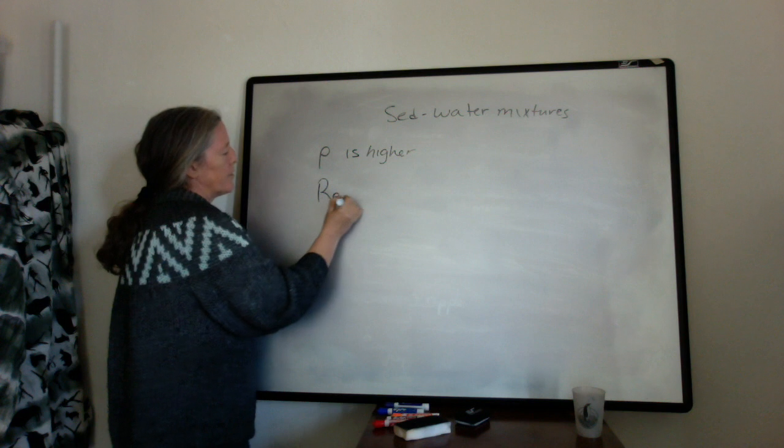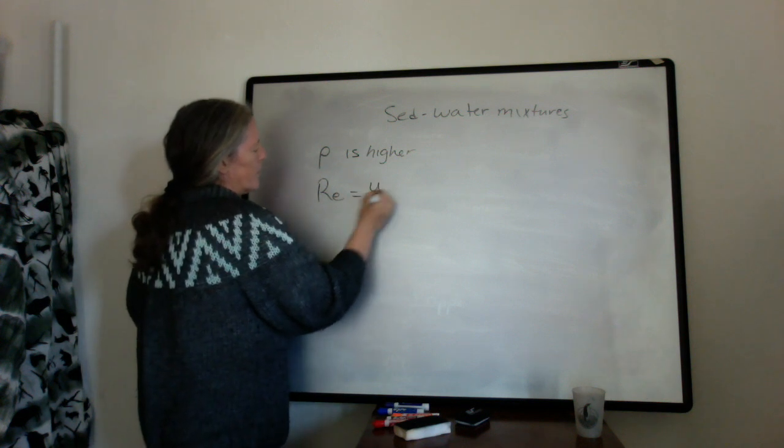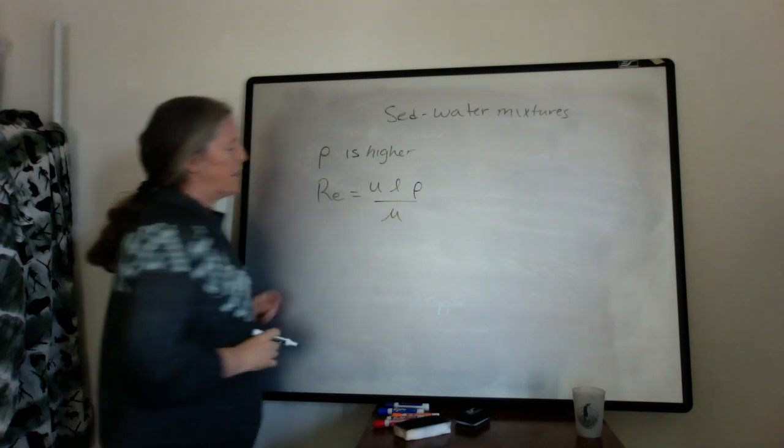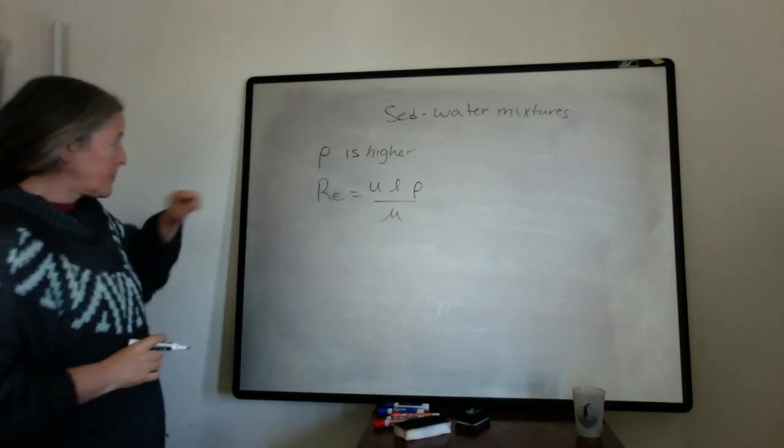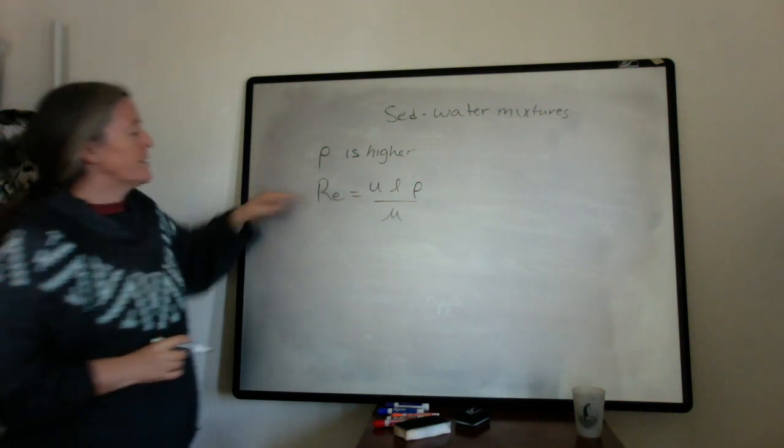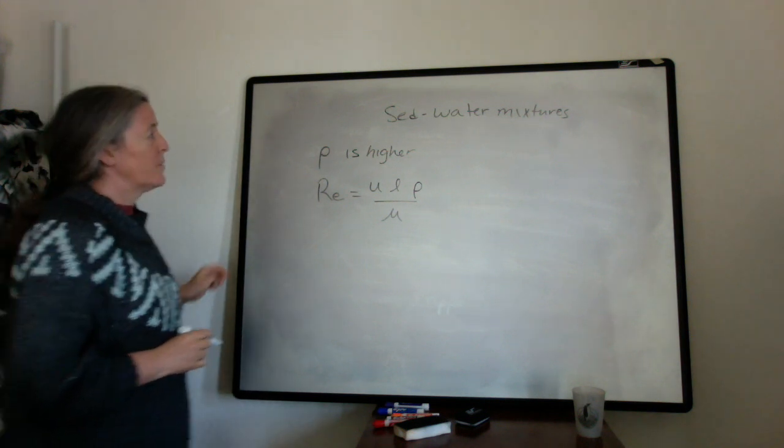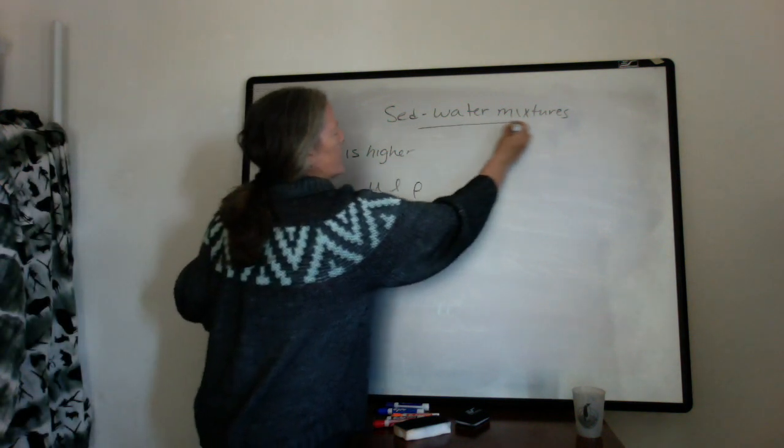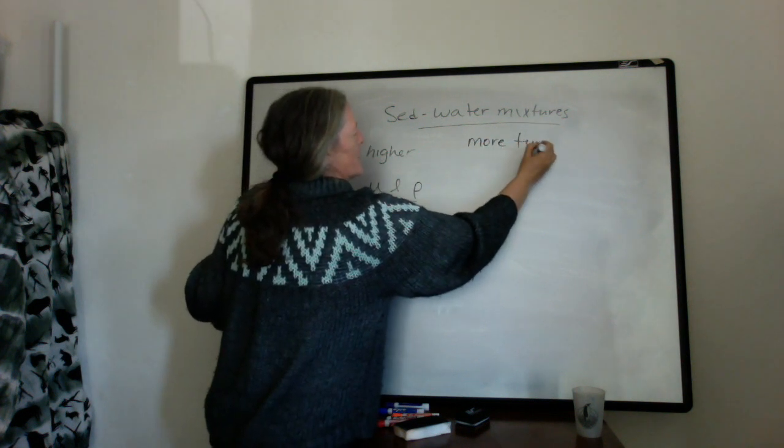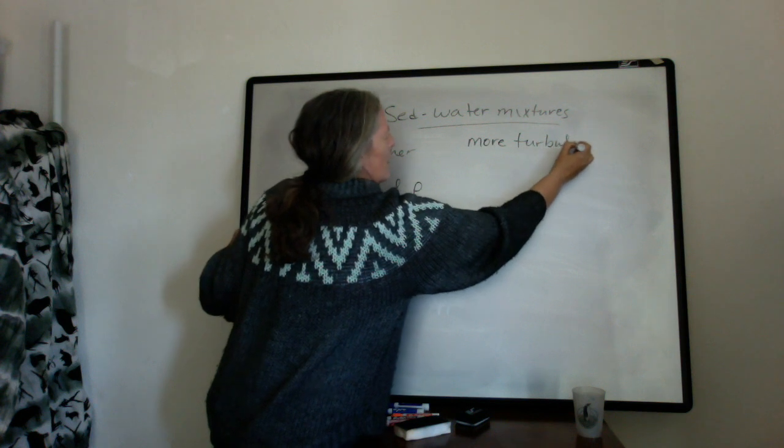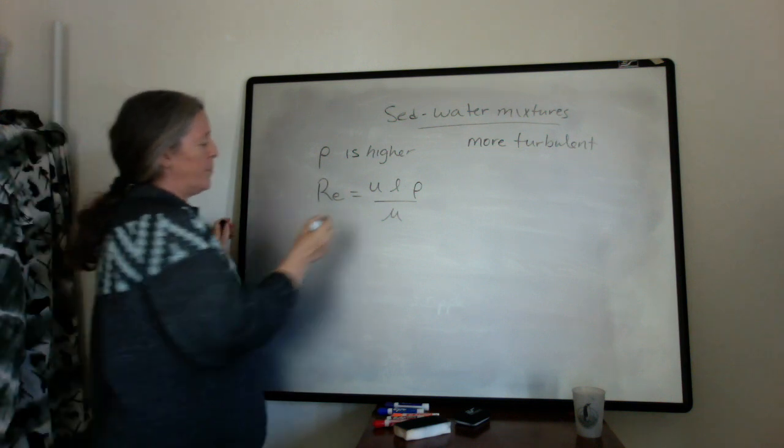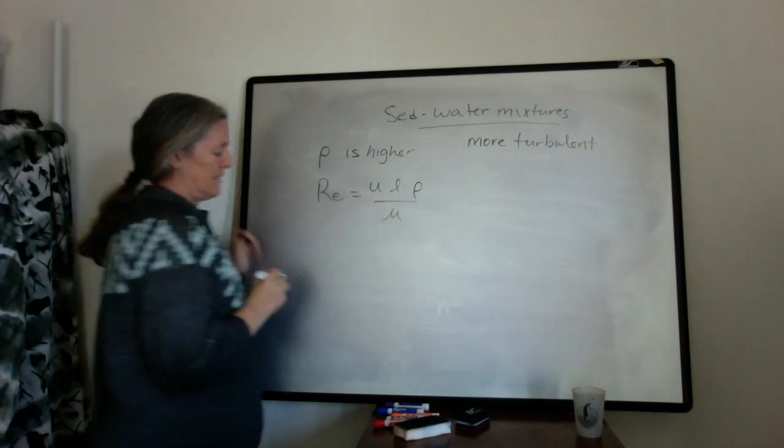If we go back to thinking about the Reynolds number, we have the Reynolds number is the flow speed times the flow depth times the density over the viscosity of the flow. So when your density is higher, your Reynolds number is higher and the flow is more turbulent. So almost always sediment water mixtures are more turbulent if they have a certain amount of sediment in them, because the Reynolds number is higher, because density is higher.